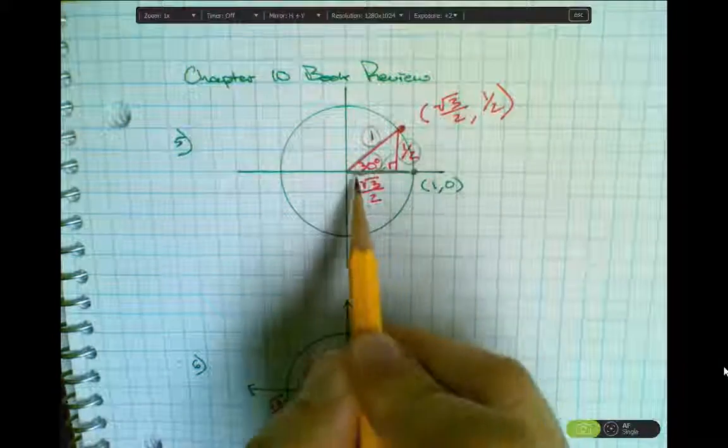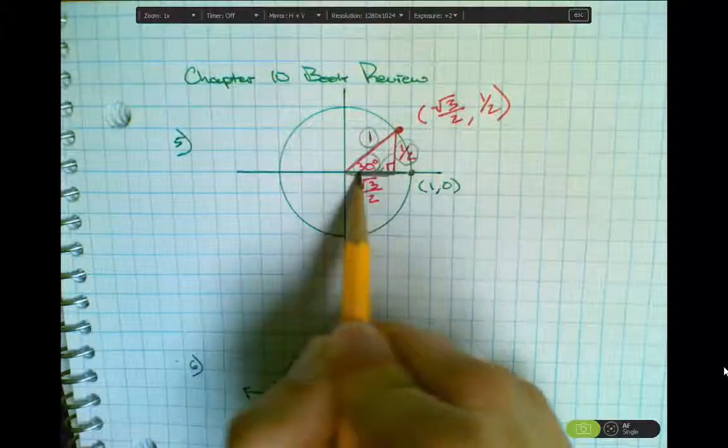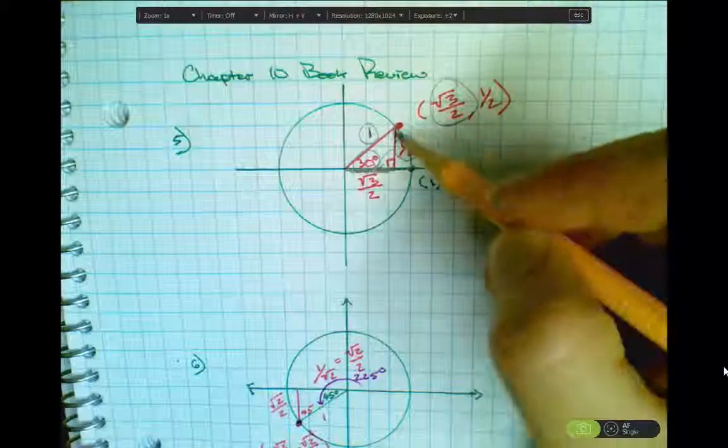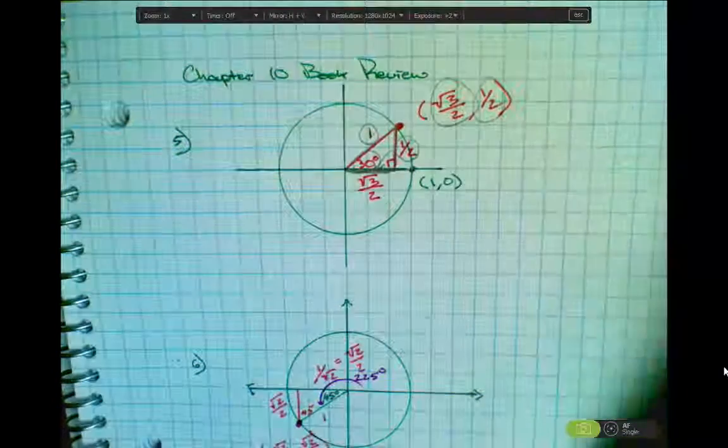When I go to write the coordinate, what's the change in x? What's the horizontal change? The horizontal change is root 3 over 2. What's the vertical change? The vertical change was 1 half.